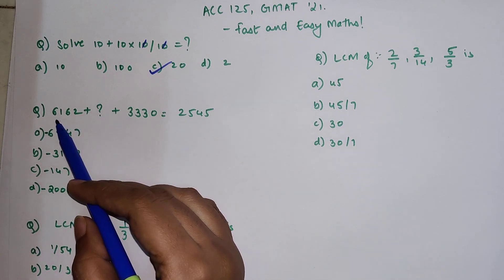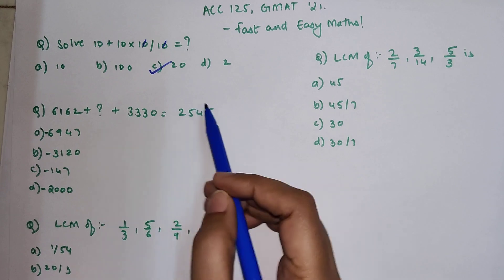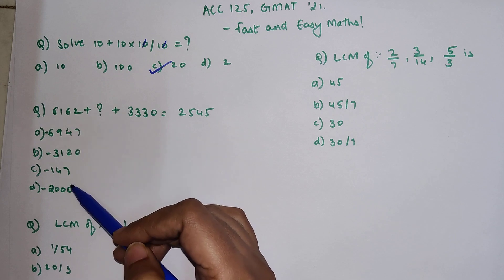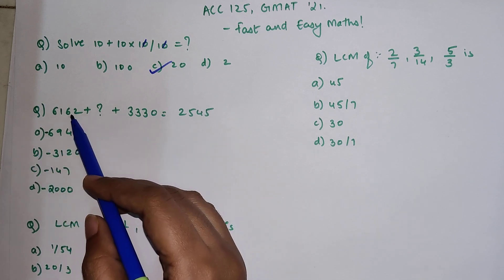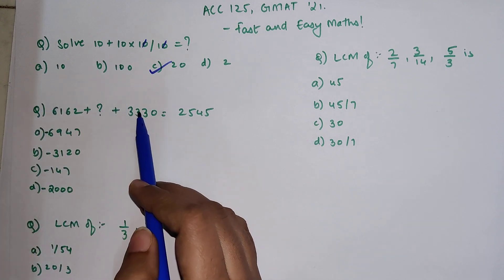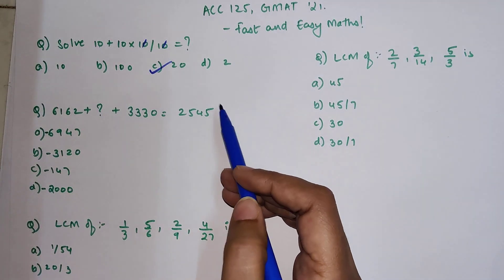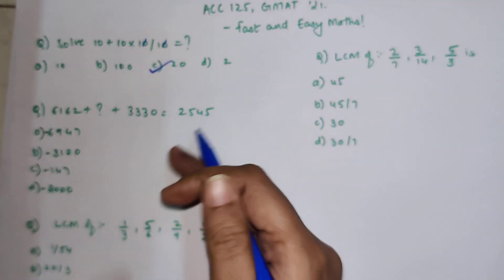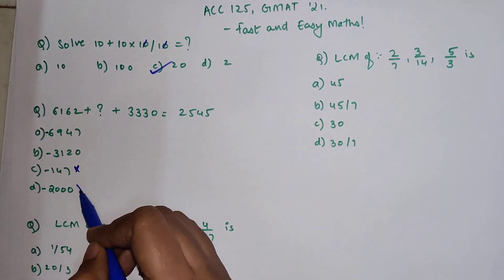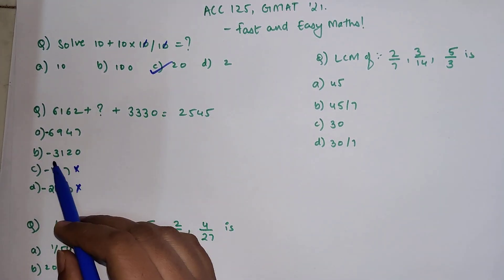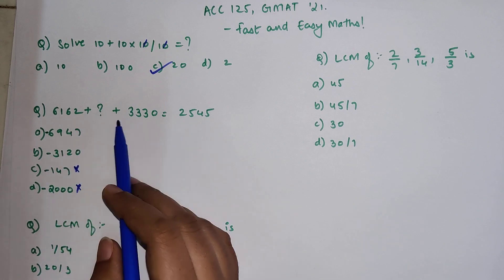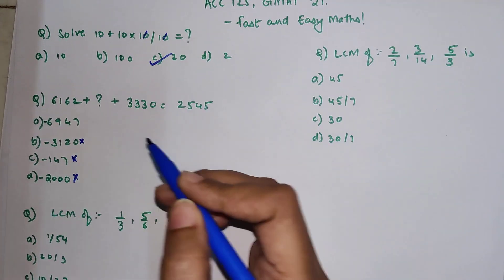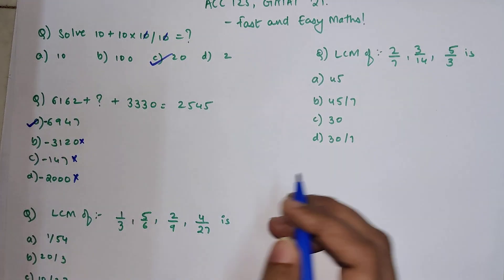So over here now what we are having is we have something in 6000 and then we have something in 3000 and the answer should be something in 2000. So now look at all your options. If you subtract 2000 from here what you are left with is something in 4000, when you add 3000 to it your answer should be in 7000. That is not going to be possible. So if you do 2000 subtraction your answer is coming out to be bigger. By default this option gets cancelled. Now if you subtract 3120 still your answer will be somewhere in 6000 or maybe 6500 or something like that. Again that is not possible. So the only option left is this one.